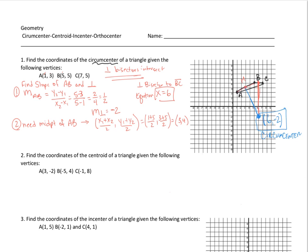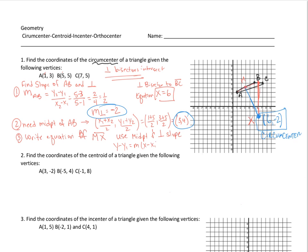Suppose you didn't have a nice grid to work on graphically — you'd have to write the equation. Step 3: write the equation and look for the point of intersection. We use the midpoint (3, 4) and the perpendicular slope of negative 2, and apply the point-slope form: y − y1 = m(x − x1).